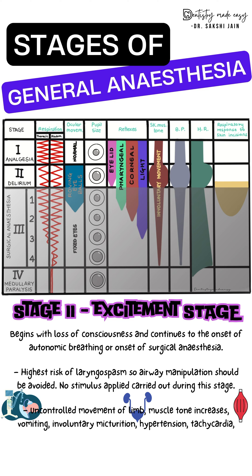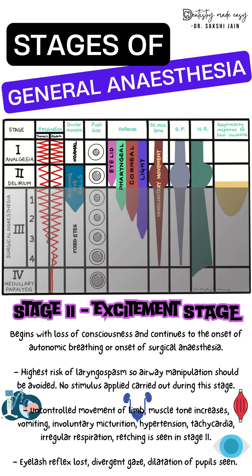In stage 2, there is the highest risk of laryngospasm, so airway stimulation should be avoided. Signs include hypertension, tachycardia, irregular respiration, unpurposeful response to pain, movement of limbs, and loss of eyelash reflex. You may hear retching sounds as if the patient is going to vomit. There is excitement, increased muscle tone, vomiting, involuntary urination, and dilation of the pupils. Because of this, no stimulus should be applied during this stage.